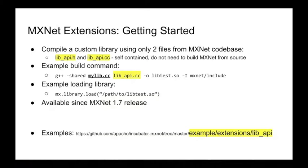Here's an example build command. You can see here we're using a custom library with functionality in mylib.cc. We compile that with the libapi.cc file and include the MXNet include directory to get libapi.h. You just need to make the libapi.h file available during your build, and you build a shared object — and now you have your custom library. Simple as that.